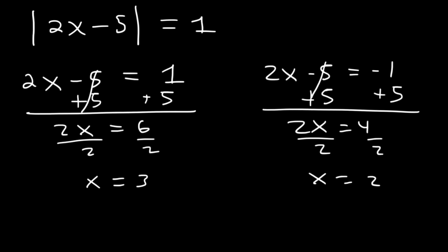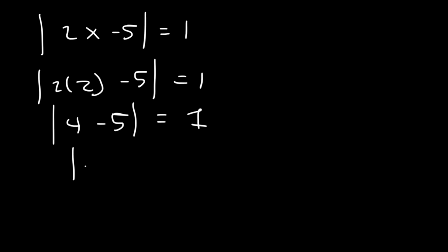So if you check the work, you can see that it's going to work out. So if we plug in 2, 2 times 2 is 4. 4 minus 5 is negative 1. The absolute value of negative 1 is 1. So the equation is true.